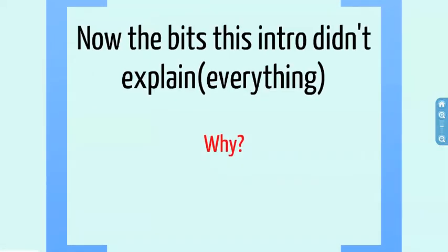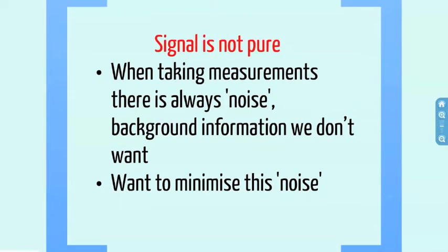Now, to try to explain everything not covered by this mock advert — which is where I have to try not to bore you. Why am I talking about differential amplifiers? Often, when taking measurements of potential differences, the signal is not pure. This means there is noise or background information that we don't want to be looking at, which could severely reduce how clear our results are and even prevent any conclusions from being drawn at all. So we want to minimise this so-called noise.